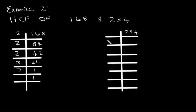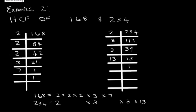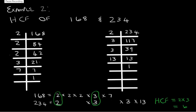Now let's see if you can do the next one on your own. 234 divided by 2 is 117, divided by 3 is 39, divided by 3 again is 13, and 13 divided by 13 is 1. So 168 is 2 times 2 times 2 times 3 times 7, and 234 is 2 times 3 times 3 times 13. We need to circle those who have pairs — and we've circled 2 and 3. So the highest common factor of 168 and 234 is 2 times 3, which equals 6.